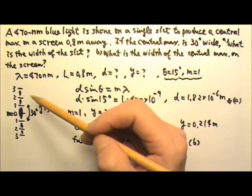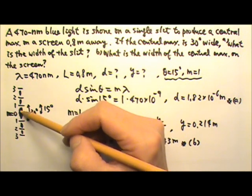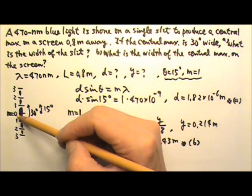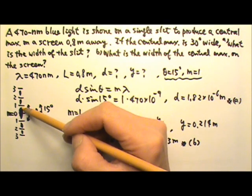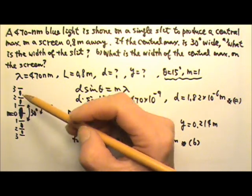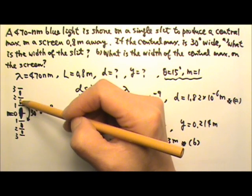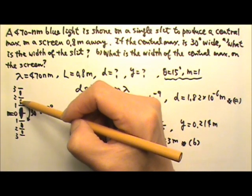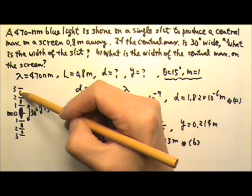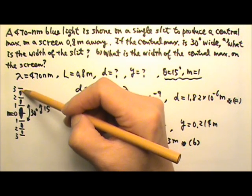If it is a single slit, then I know I have, bright for M equals to 0, but the central maximum has to be twice as wide. That means they have to fit like this. So the M equals to 0 is bright. M equals to 1.5 is bright. 2.5 is bright. M equals to 1, 2, 3 will be dark.